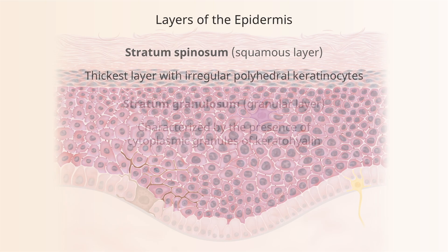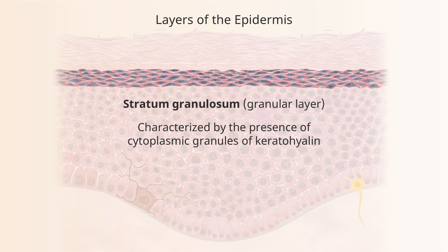On top of that is the stratum granulosum, or granular layer, characterized by cytoplasmic granules called keratohyalin granules. They contain an important protein called filaggrin, which is important for the maintenance of the layer above — the stratum corneum. The stratum granulosum is visible in almost every good skin preparation, appearing blue or dark purple.